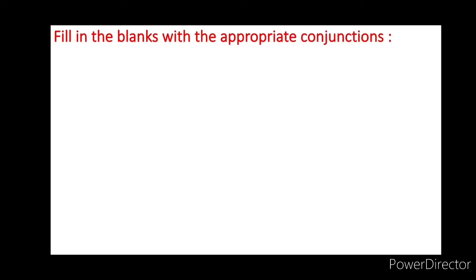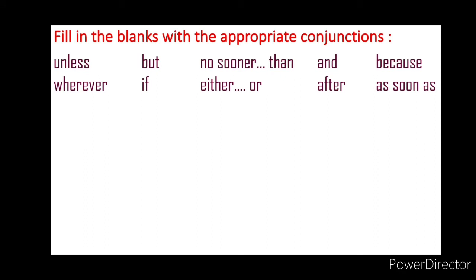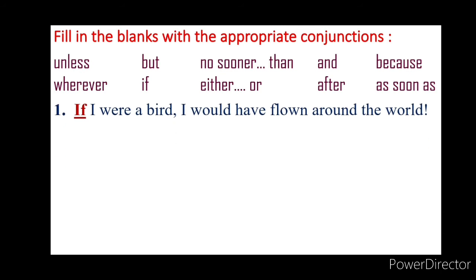Now here is an exercise. Fill in the blanks with the appropriate conjunctions: unless, but, no sooner than, and, because, wherever, if, either, or, after, as soon as. Number 1: Dash I were a bird, I would have flown around the world. Answer: If I were a bird. 'If' is used to join conditional sentences.